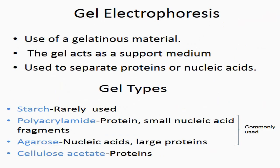Gel electrophoresis uses a gelatinous material to act as a support medium to separate proteins or nucleic acids. Types include: first, starch, which is rarely used; and second, polyacrylamide, which is commonly used to separate proteins and small nucleic acid fragments.